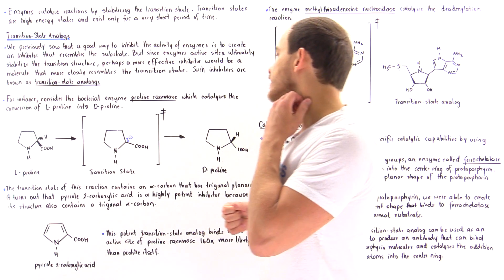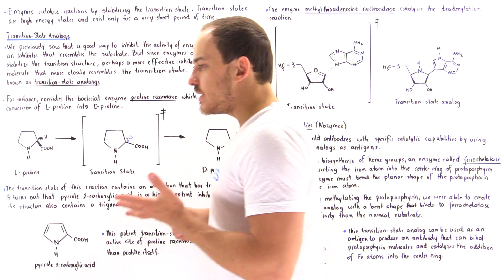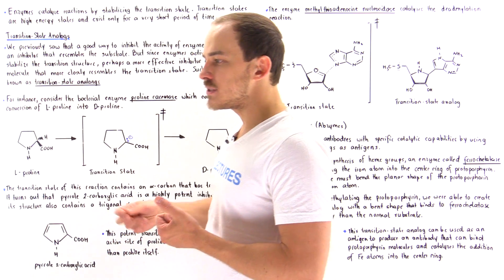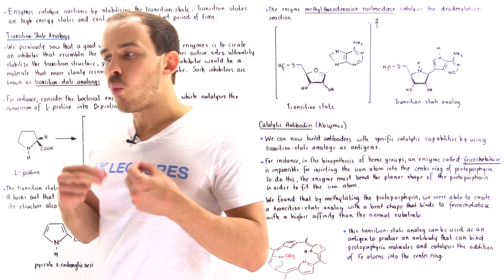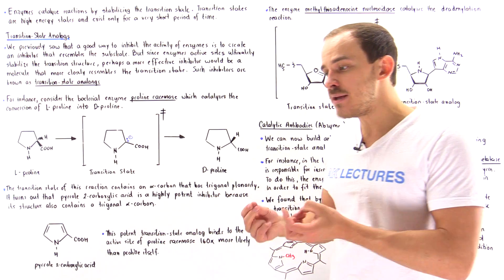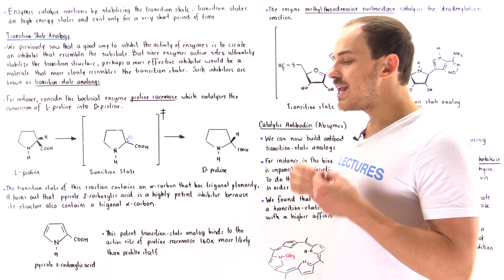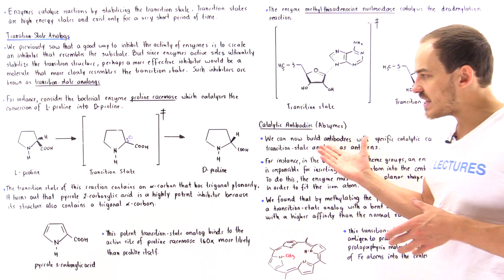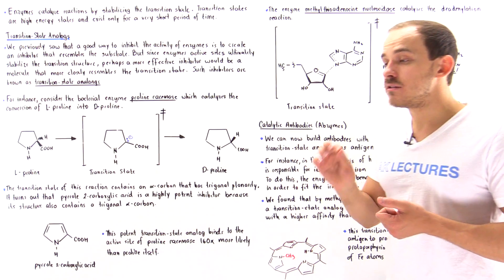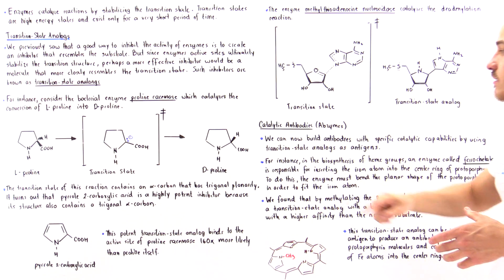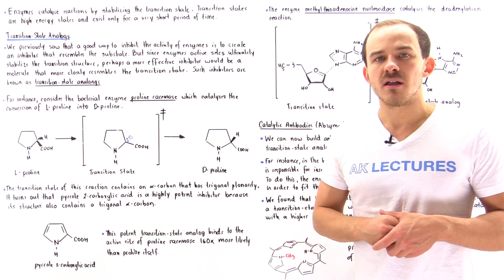The usefulness of transition state analogs includes the ability to build very effective inhibitors of particular enzymes. For instance, if a bacteria infects our body, one way to inhibit that bacterial cell's activity is to inhibit some enzyme using transition state analogs. Another important application is that we can actually create antibodies with specific catalytic capabilities by using transition state analogs as antigens. We can now build antibodies with specific catalytic capabilities by using transition state analogs as antigen molecules.